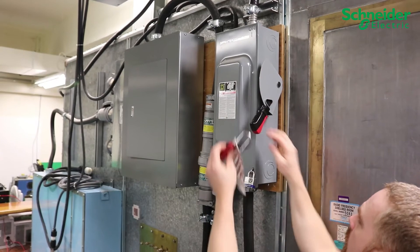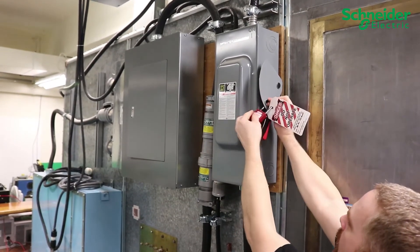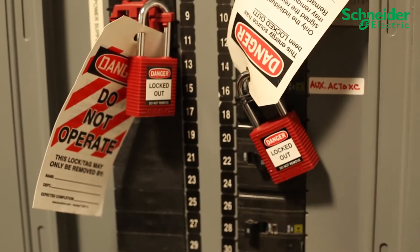Ensure your upstream AC and DC breakers and disconnects are turned off and locked out and tagged out using LOTO procedure.